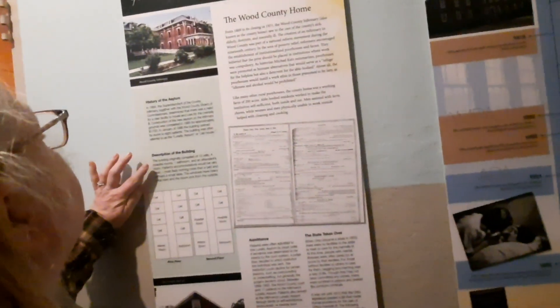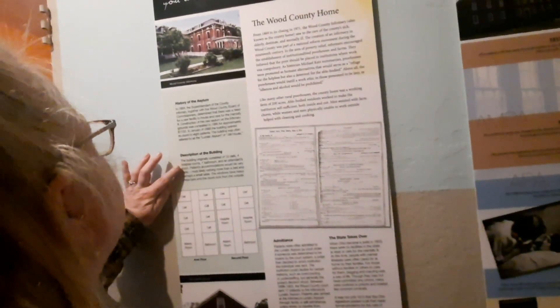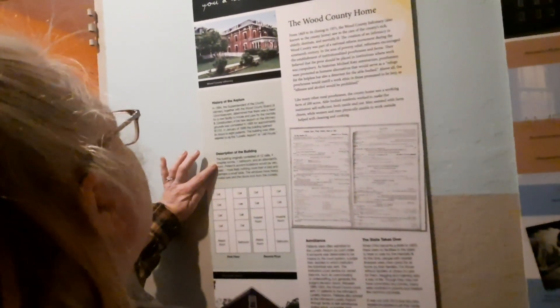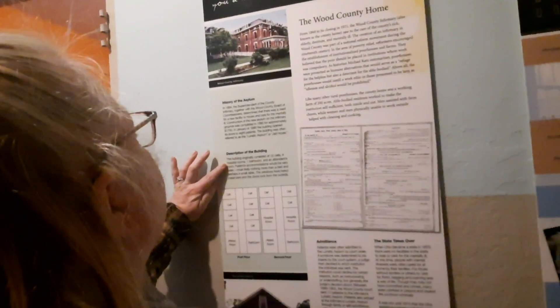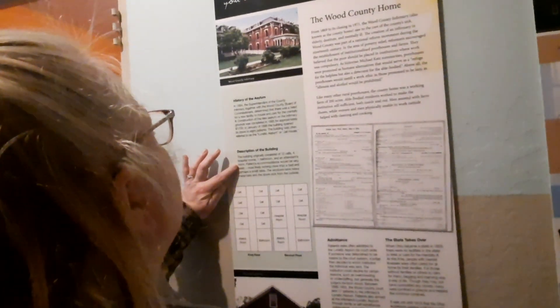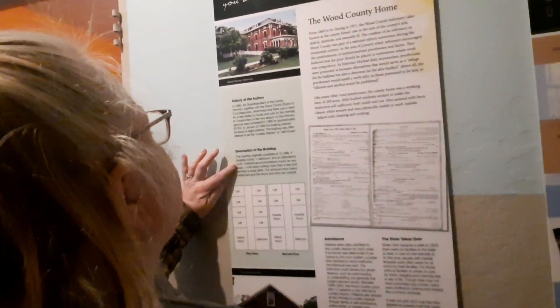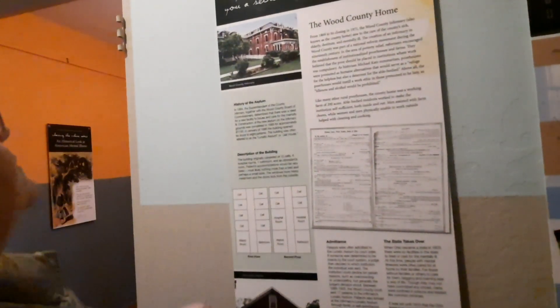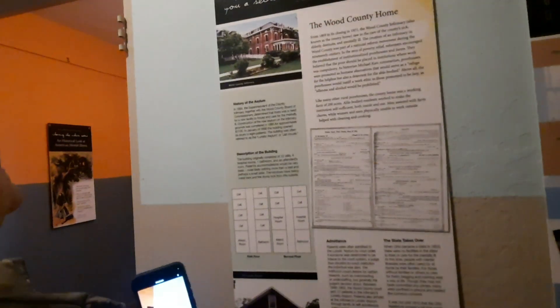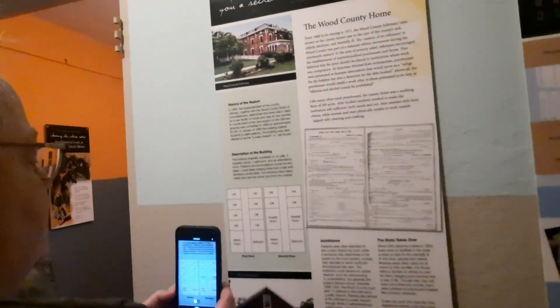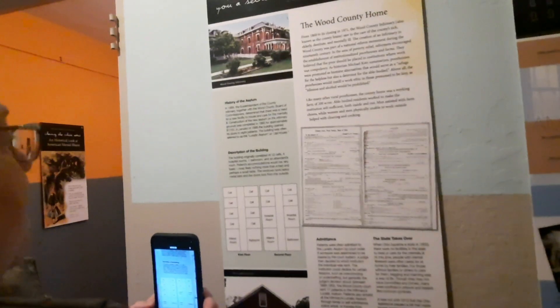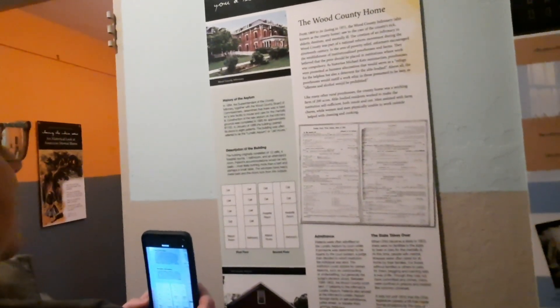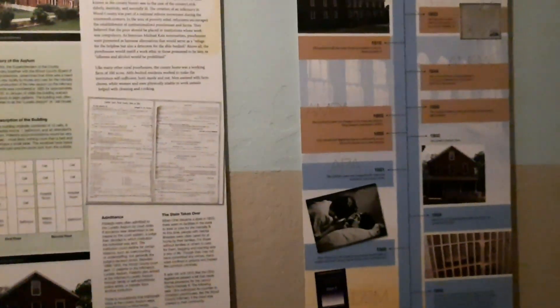The building originally consisted of 12 cells, four hospital rooms, one bathroom, and an attendant room. Most likely had nothing more than a bed and a small table. Those bars might have been correct to the time period or something. Interesting.